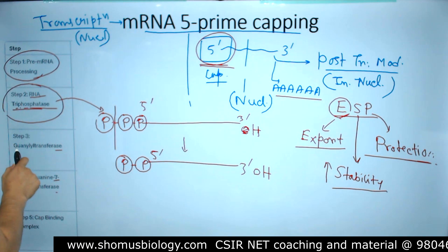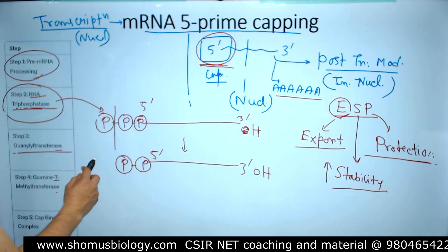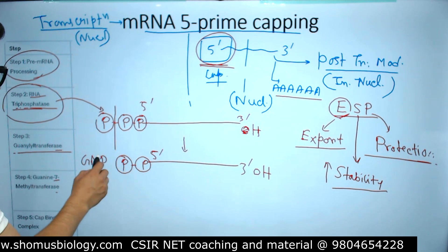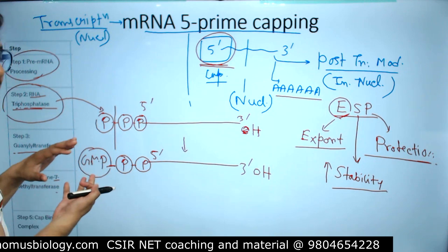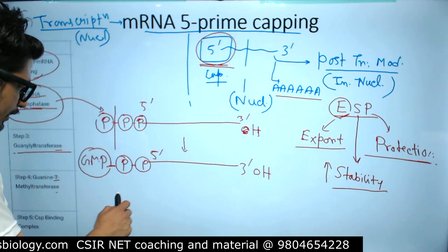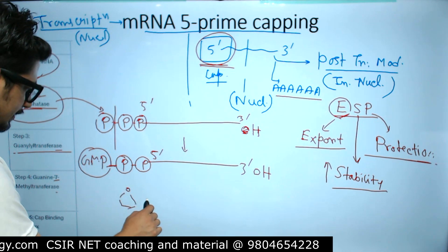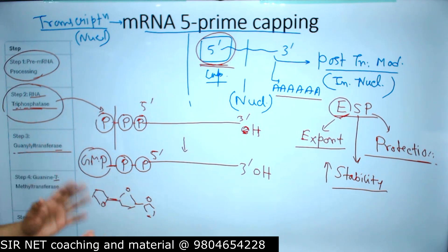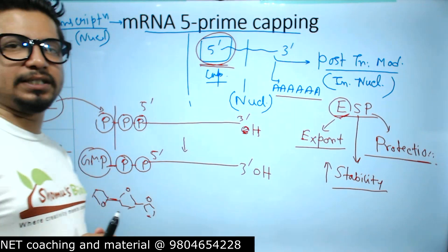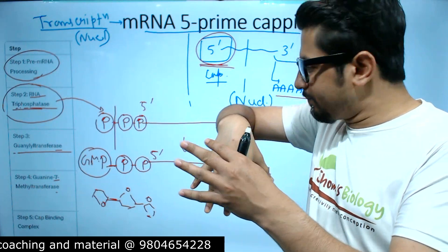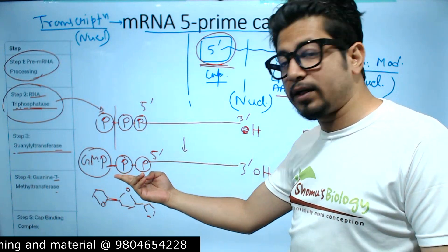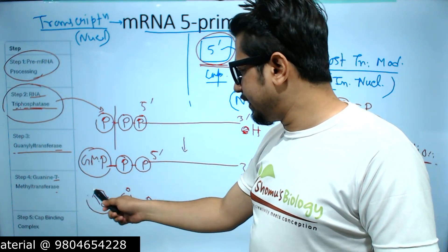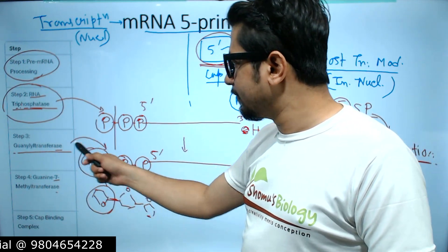The second enzyme is guanylyltransferase. This enzyme attaches GMP — guanosine monophosphate — to the 5' end. However, this attachment is done in a reversed or inverted fashion. The GMP is inversely oriented and capped onto the two existing phosphates at the 5' end. So guanylyltransferase attaches GMP in an inverted manner, creating the cap structure. This inverted linkage is key to the stability of the cap.